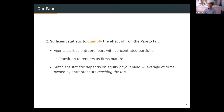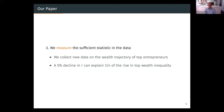In a world where people getting to the top of the distribution own firms that issued a lot of equity or are very leveraged, we'll have a large effect of low rates on wealth inequality. One contribution of the paper is collecting new data on the whole wealth trajectory of top entrepreneurs. Most existing empirical results in inequality focus only on rich people and what they do. What we look at is the whole trajectory before becoming rich, and we show it's important to examine this whole trajectory to understand the effect of interest rates on wealth inequality.